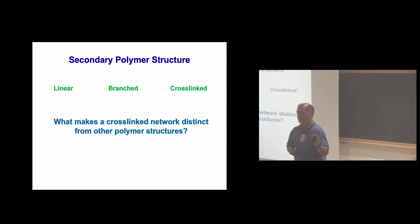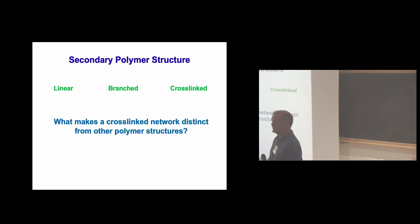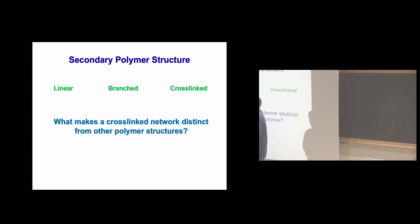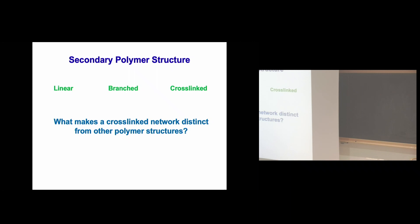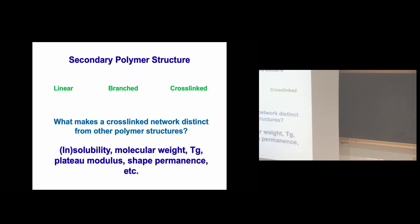In the tradition of a school rather than just a lecture, I'm going to ask questions and actually expect answers. If you were paying attention for the last five minutes, you can already tell me what makes a crosslinked structure distinct. We're going to have mechanics that are different — a plateau modulus in the rubbery regime. What are those crosslinks going to do to the glass transition temperature? They're going to increase it.